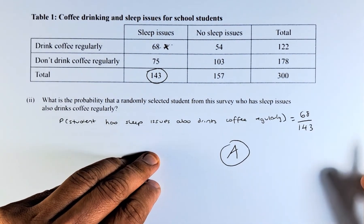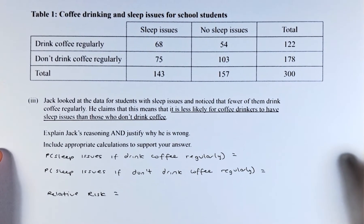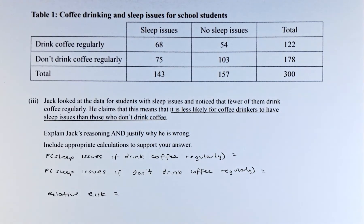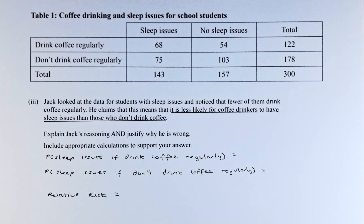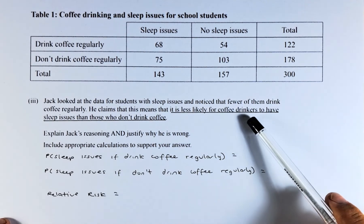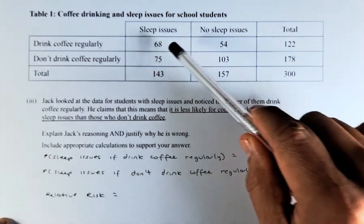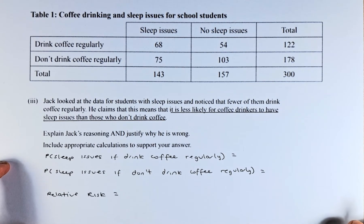Next, we look at part 3. Jack looked at the data for students with sleep issues and noticed few of them drink coffee regularly. He claimed that it is less likely for coffee drinkers to have sleep issues than those who don't drink coffee. He is looking at an absolute number — 68 against 54 — and made that decision. The question asks us to explain Jack's reasoning and justify why he is wrong.